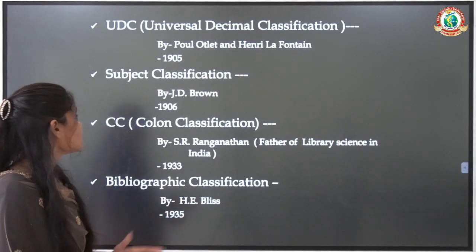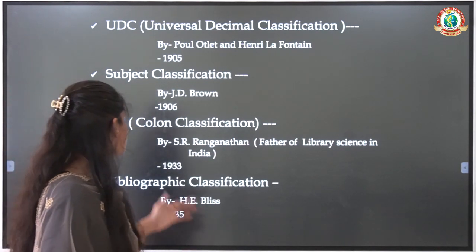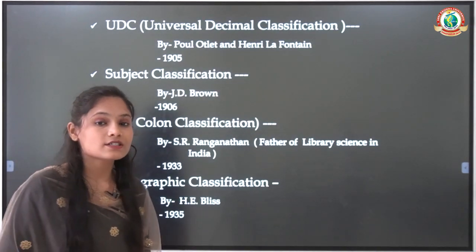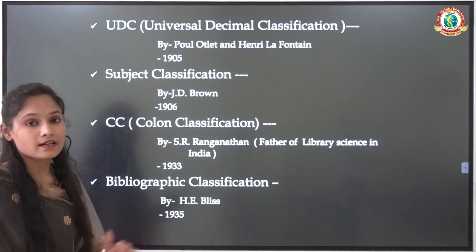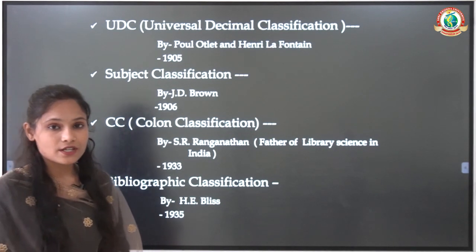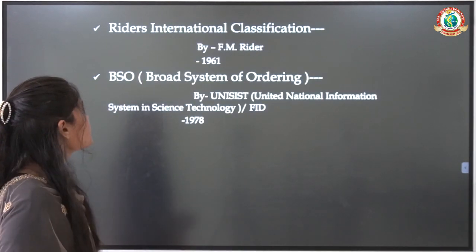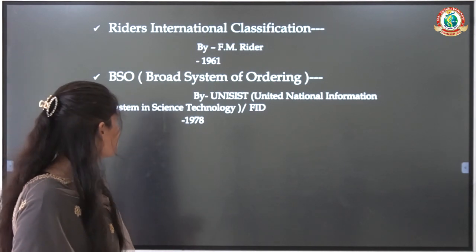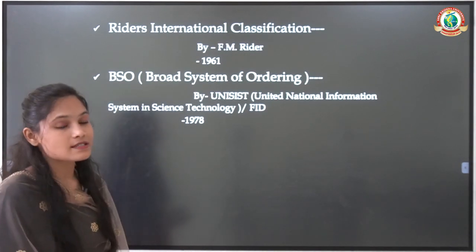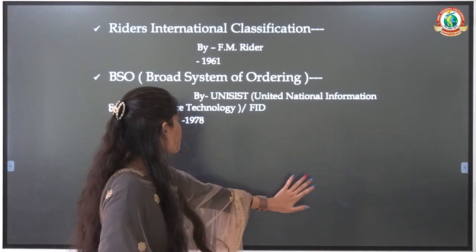Subject Classification was given by J.D. Brown Sir in 1906. CC — Colon Classification — is India's best classification scheme, given by Dr. S.R. Ranganathan, who is the father of library science in India; he gave this scheme in 1933. Then came Bibliographic Classification, given by Bliss Sir in 1935. Then Rider's International Classification, given by F.M. Rider Sir in 1961. BSO — Broad System of Ordering — was given jointly by UNISIST (United Nations Information System in Science and Technology) and FID in 1978.